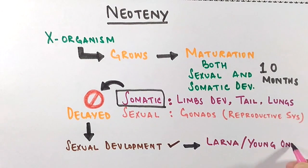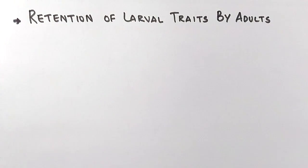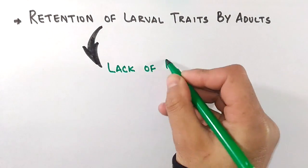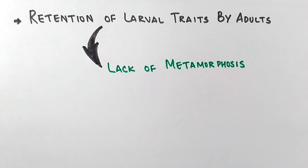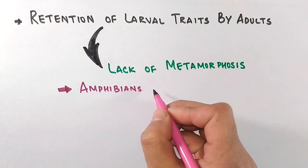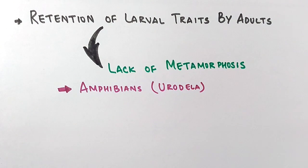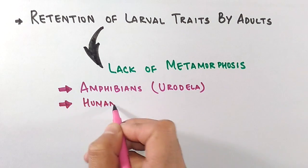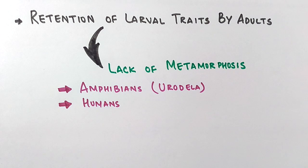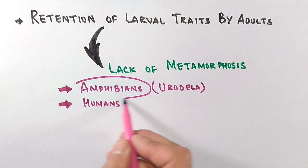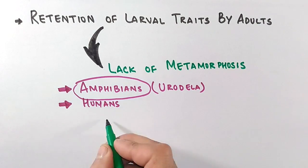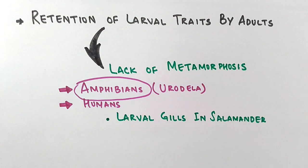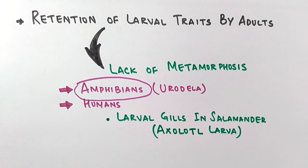When neoteny occurs, it results in the retention of larval traits by the adult, and the reason behind this is a lack of metamorphosis. Neoteny is mostly seen in amphibians, particularly in the order Urodela, and to some extent it is also shown by humans — for example, when an adult is baby-faced, or neotenous traits are exhibited by Down syndrome patients. It is more pronounced in amphibians like salamanders — for example, the axolotl larva, which retains gills even in the adult stage.